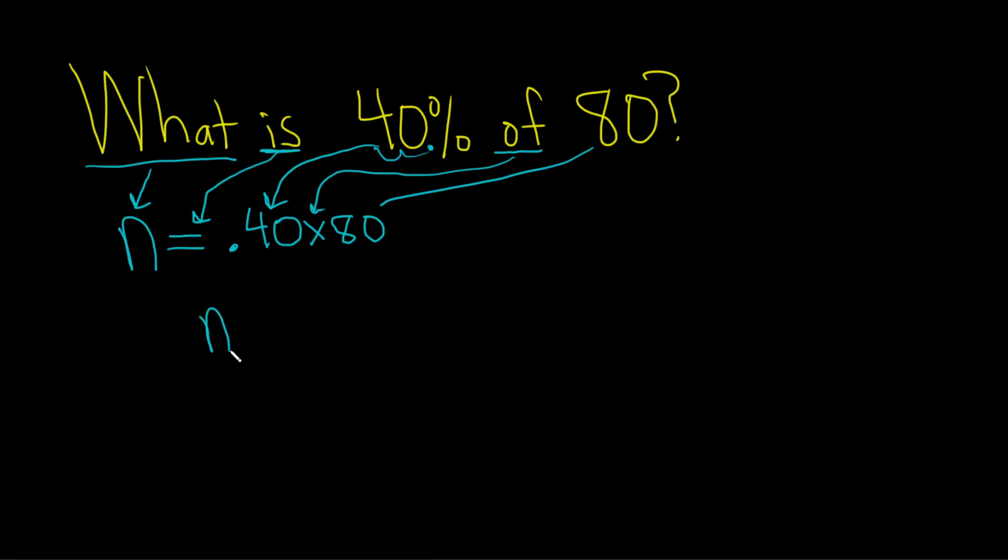you end up with n equals 32. That would be the final answer. Let's read it back together: 32 is 40% of 80.